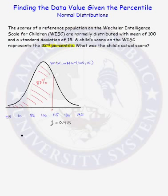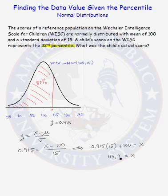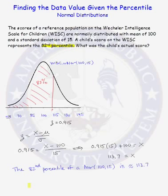Let's write the formula for a z-score. A z-score is equal to the data value minus the mean divided by the standard deviation. We know the z-score is 0.915, we're looking for the data value, the mean of the distribution is 100, and the standard deviation is 15. Rearranging this formula to solve for the data value x, we see that x is approximately 113.7. And we have that the 82nd percentile of this normal random variable is approximately 113.7.